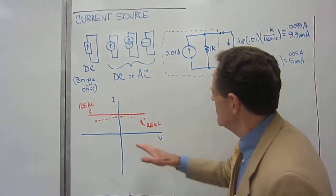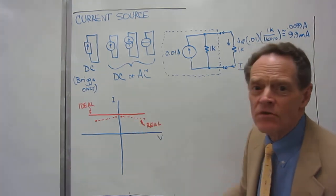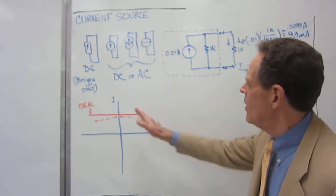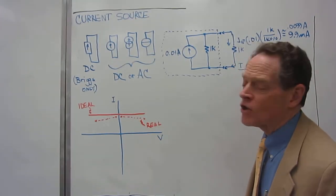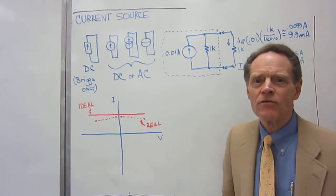So, basically, this is what the ideal versus the real current source is like, and what it looks like on the IV curve, and that's it for the current source, and thank you for watching.